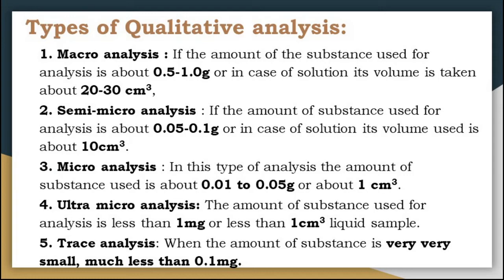The next type is semi-micro analysis. In semi-micro analysis, the substance used for analysis is about 0.05 to 0.1 grams, and for liquid samples, up to 10 cm³ is used. This analysis has advantages over macro analysis because it gives equally reliable results with careful working. It reduces large consumption of chemicals and avoids atmospheric pollution due to gas evolution. Time is also saved because semi-micro analysis uses a centrifuge machine, which immediately separates the precipitate from the centrifugate or supernatant solution.